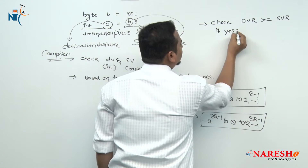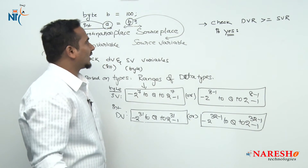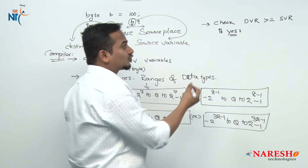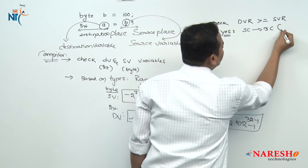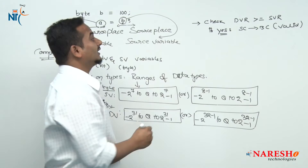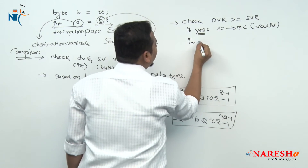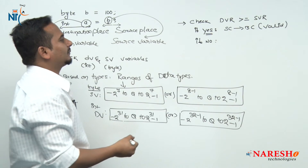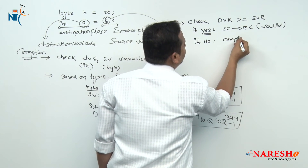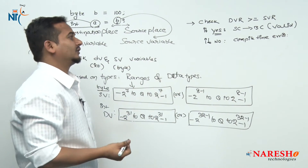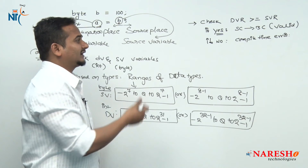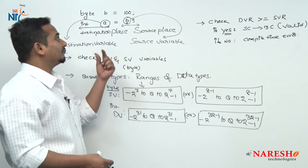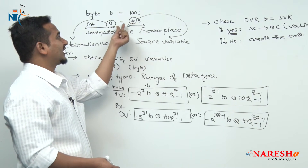If yes — if the above condition is true — then the statement is ready to be converted from source code to byte code. Simply we can say that statement is valid. If the above condition fails, we will get a compile time error: possible loss of precision. So these are mainly the 3 steps done by the compiler when assigning the value to a variable with the help of another variable.